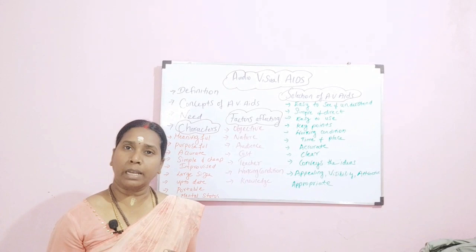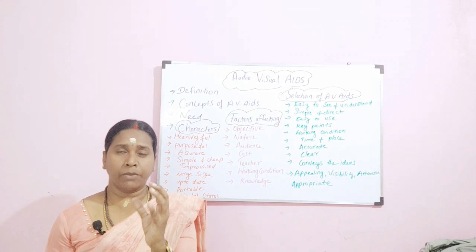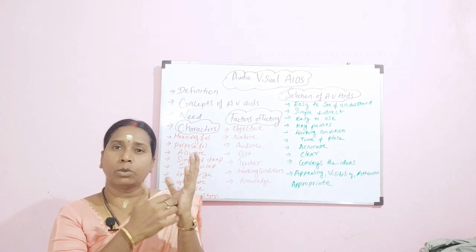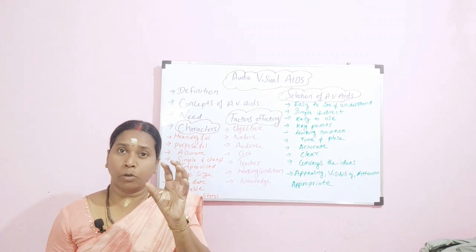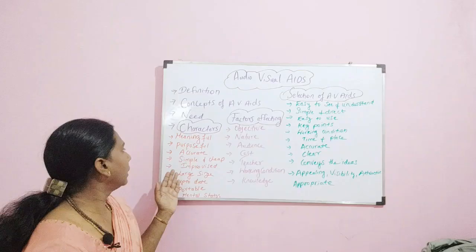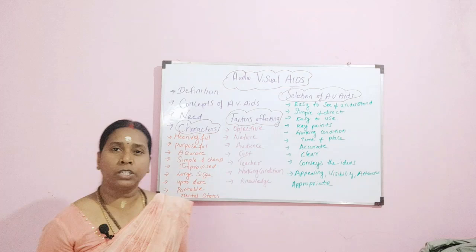Then it has to be accurate. When you are using an AV-AIDS, it has to be accurate in nature. When you are giving information — suppose you are telling about a femur bone — you have to talk about the length, the width, how it is going to get fixed, all those things. You must have exact information. Your AV-AIDS must provide accurate information.